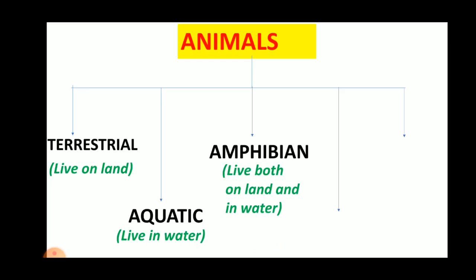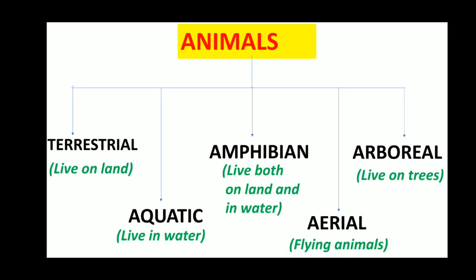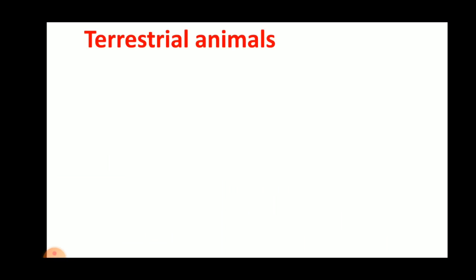The fourth group is Aerial, and the fifth is Arboreal. Let us learn about them one by one in detail, starting with Terrestrial Animals.